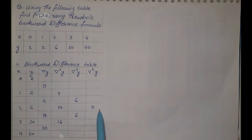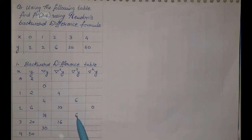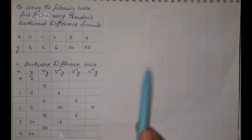Always remember, when solving sums based on backward difference, we take the values that are last in the entire table. So the values we will use when substituting into the formula are: x_n = 4, y_4 = 50, first backward difference = 30, second = 16, third = 6, and fourth = 0.